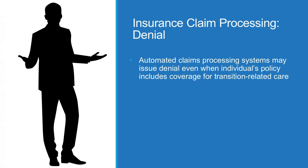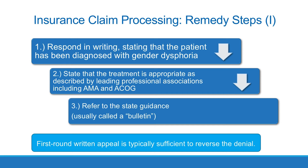Insurance claim processing denials. While some insurers and insurance policies cover transition-related care and will approve claims, others may deny the claim. In many cases, automated claims processing systems will issue a denial even when the individual's policy includes coverage for transition-related care. Remedy step 1: Respond in writing within the specified time limits stating that the patient has been diagnosed with gender dysphoria and that the treatment is appropriate as described by leading professional associations, including the AMA and ACOG, and refer to the state guidance, usually called a bulletin. In the vast majority of cases, a written appeal to the initial denial is sufficient to reverse the denial.